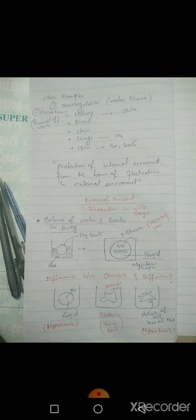First, when the cell is outside in a medium with more water, the cell becomes turgid — this condition is called hypotonic. Next, in hypertonic conditions, there is a shrinking of the cell. If the concentration of water and salts inside the cell matches the outside medium — whether in an animal cell or a plant cell — then this is the normal cell, and this condition is called isotonic.